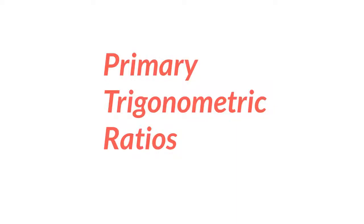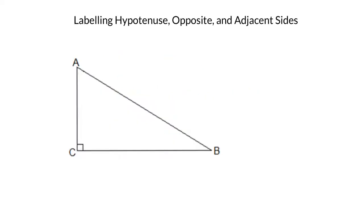There are three main ratios that are true for every right triangle. Before we get to the ratios, we have to talk about some terminology. There are three labels we can give to the sides in a triangle. The first one is the hypotenuse, the second one is opposite, and the third one is adjacent. The hypotenuse is the longest side in the triangle, and it's always directly across from the 90 degrees. The position of the hypotenuse never changes. The opposite and adjacent sides are relative terms, and they depend on what your reference angle is.